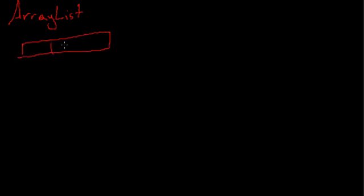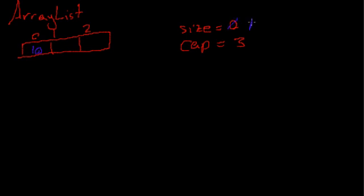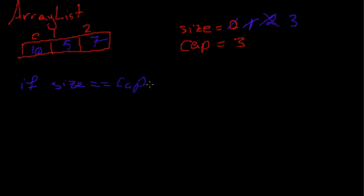Let's consider an example. Say you have an array with a capacity of three. You can put three elements in here and you're going to keep track of size and capacity. Size is how many elements you currently have in this ArrayList, and capacity is how many elements you potentially can put in here. When the size equals the capacity, it means you have occupied all of the spots, and in this case you need to resize.